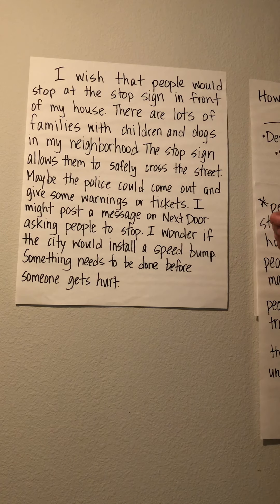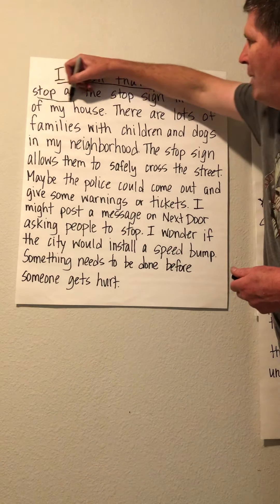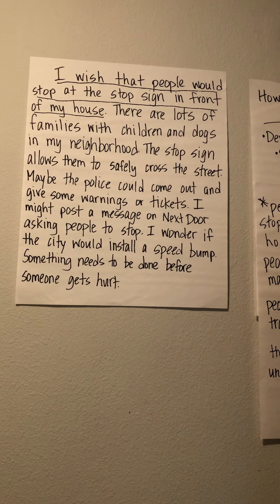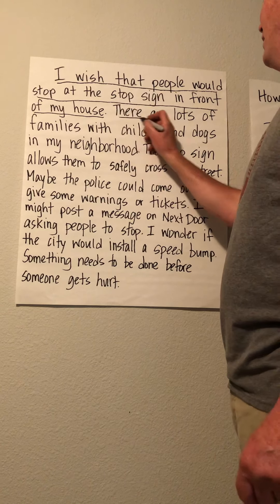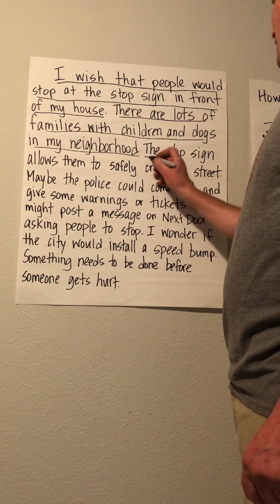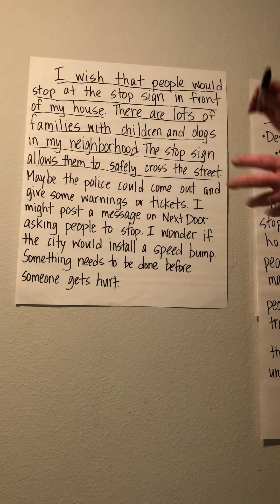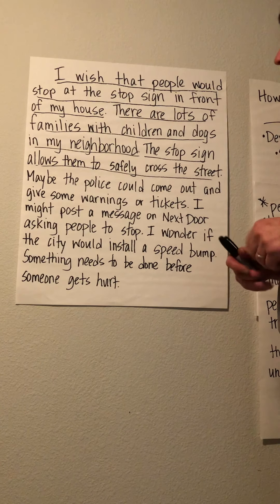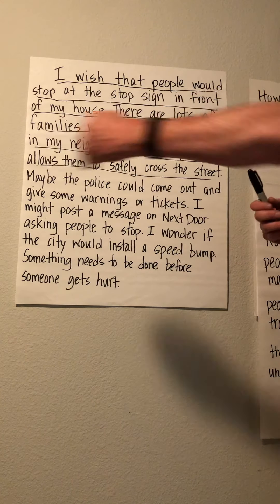The first thing I did was list the problem: I wish that people would stop at the stop sign in front of my house. Then I expanded and gave more information about the problem. I said there are lots of families with children and dogs in my neighborhood, and the stop sign allows them to safely cross the street. So I listed my problem — people aren't stopping — and explained why it was a problem.